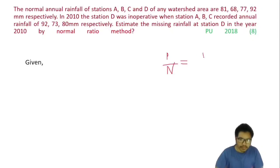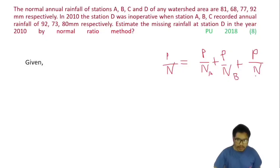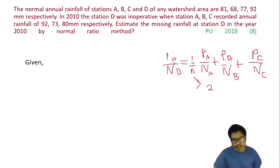By the normal ratio method, the formula is: P_D / N_D = (1/n) × (P_A / N_A + P_B / N_B + P_C / N_C), where A, B and C are the known stations and D is the unknown station. Since there are three known stations, we divide by n = 3 and solve for the precipitation at D.